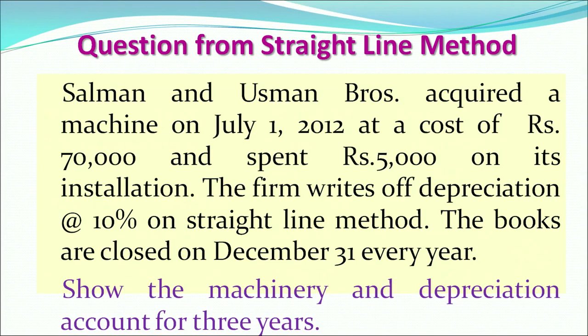Now let us take an example on the accounting methodology. Salman and Usman Ross acquired a machine on 1st July 2012 at a cost of rupees 70,000 and spent another rupees 5,000 on its installation. The firm writes off depreciation at 10% on the straight line method. The books are closed on 31st December every year and we are required to show the machinery account and the depreciation account for 3 years. This question enables us to understand how accounting entries are recorded in the financial books of accounts.